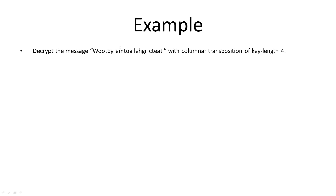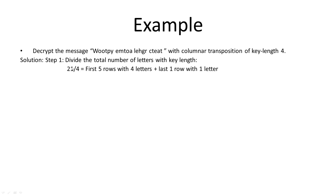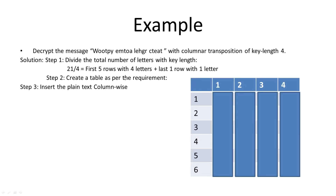Let's look at an example. Our ciphertext is: W O O T P Y E M T O A L E H G R C T E A T, and we need to decipher it using columnar transposition of key length four. Step one is the same: divide the total number of letters by the key length. There are 21 letters divided by four, giving us five rows with four letters and one last row with only one letter. We then create the table accordingly.